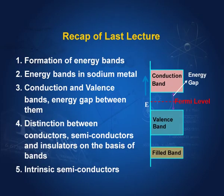In non-conductors, this energy gap is of the order of 10 electron volts. In semi-conductors, this is of the order of 1 electron volt and in metals or in conductors, they overlap. That is how we distinguished between the conductors, non-conductors and semi-conductors.